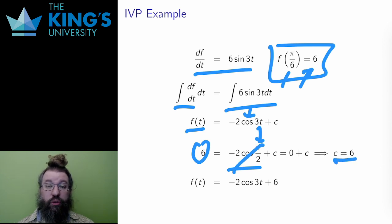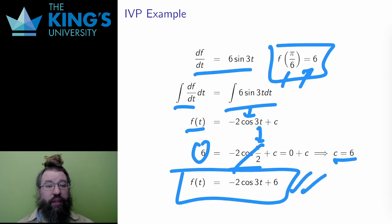Therefore, the unique solution that solves this IVP is f of t equals negative 2 cos 3t plus 6.